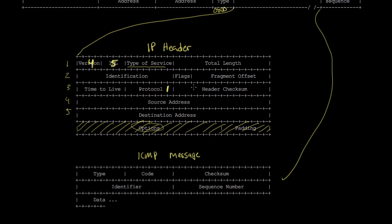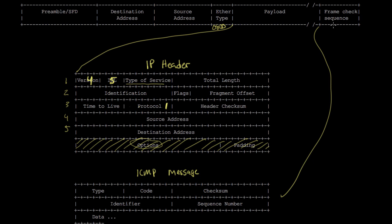Then we have the header checksum, which works similarly to the frame check sequence in Ethernet or PPP — it's just a checksum of the values in the IP header. It's somewhat redundant because the Ethernet or PPP frame already has a frame check sequence, but it was part of the protocol and so it exists. Finally, there are the source and destination addresses — the source and destination IP addresses — and it's the destination address that routers look at to make forwarding decisions.